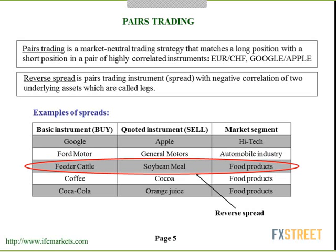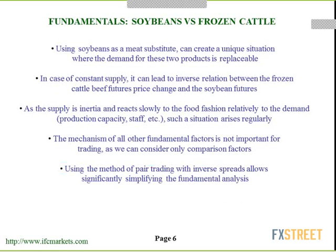Another example: soybean can be used as a meat substitute, creating situations where demand for both products is interchangeable. Considering constant or slowly changing demand, we may assume an inverse relationship between feeder cattle futures and soybean futures through a win-lose model. In case of constant supply, this leads to an inverse relation between feeder cattle and soybean futures. Supply is inertial and reacts slowly relative to demand, explained by production capacity, staff capacity, and other slow industrial parameters. Therefore, our hypothesis is that under stable market supply and substitution demand, a rise in soybean futures provokes a decrease in feeder cattle futures and vice versa.